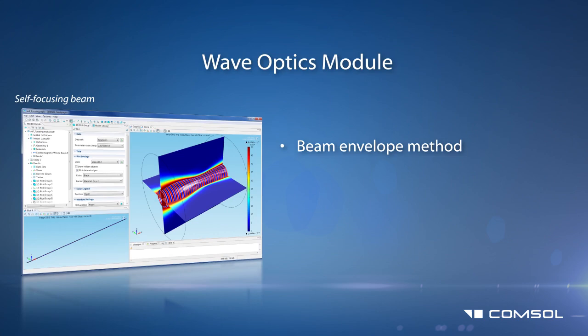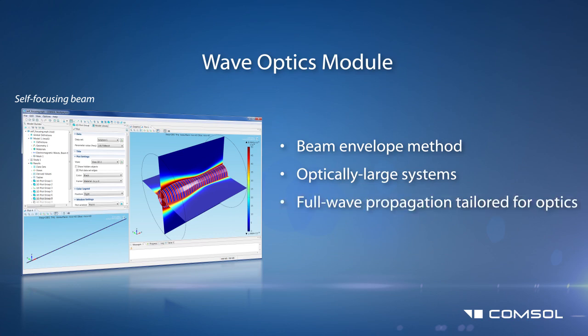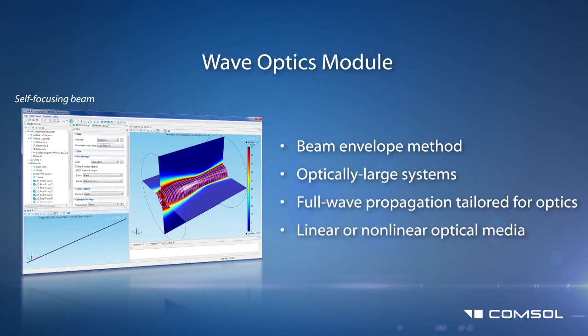The new Wave Optics module introduces the Beam Envelopes method, which is a very accurate method for simulating optically large systems. This complements the full wave propagation methods found in the RF module, which are also included in the Wave Optics module. Both methods allow for simulating electromagnetic wave propagation in linear or non-linear optical media.